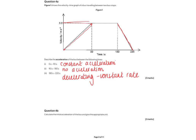Part 4b, part i: calculate the initial acceleration from 0 to 90 seconds. Acceleration equals change in velocity divided by time. The velocity changes up to 5 metres per second over 90 seconds, giving 0.056 metres per second squared, written as ms⁻². Make sure to give the appropriate unit for the mark.